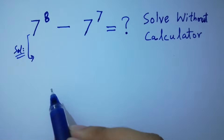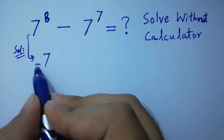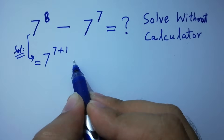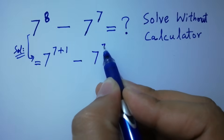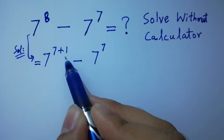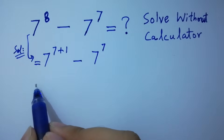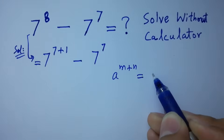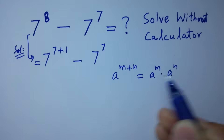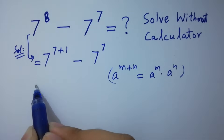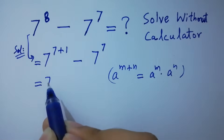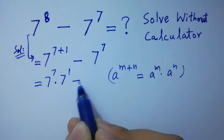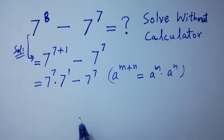It can be written as 7 to the power 7 plus 1 minus 7 to the power 7, since 7 plus 1 is 8. As we know, a to the power m plus n equals a to the power m times a to the power n. Then it will be 7 to the power 7 times 7 to the power 1 minus 7 to the power 7 as it is.